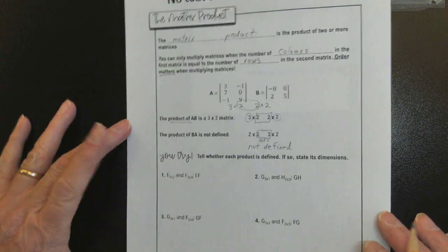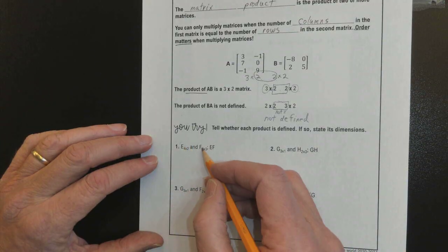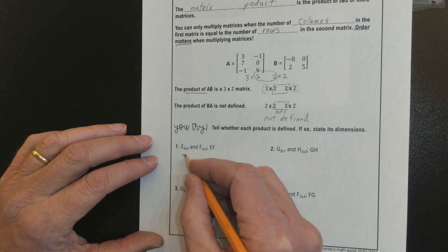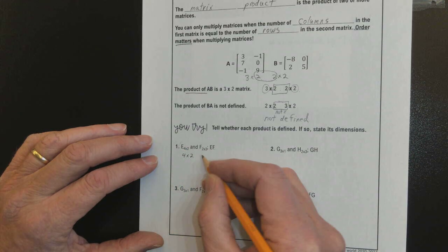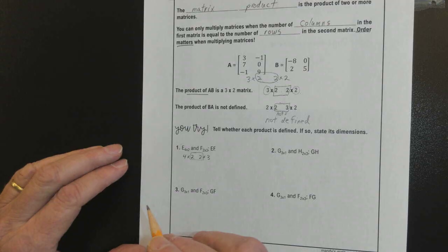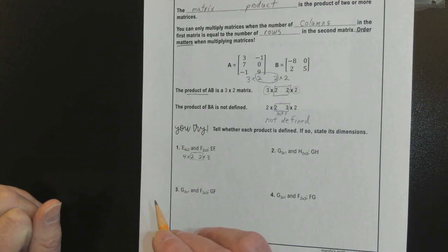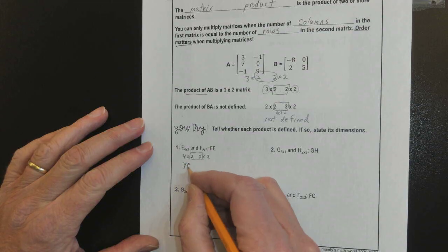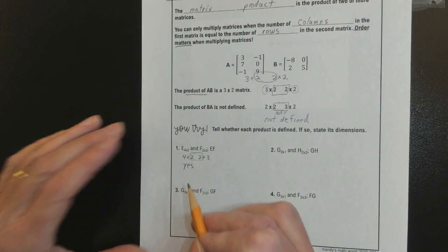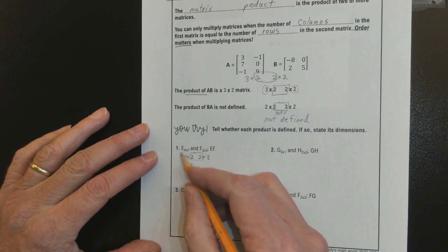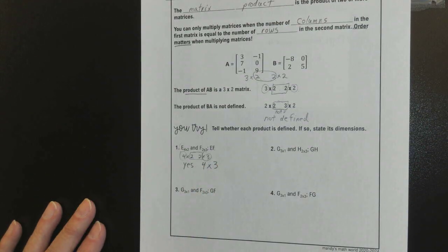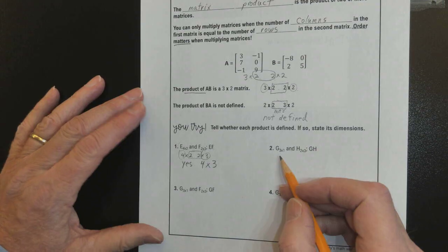They have four examples here. Let's look at the first one. E, F. It does say E times F. The order does matter. E is a 4 by 2. F is a 2 by 3. Am I able to multiply E and F together in that order? E times F? Yes. We can multiply that together. And the result would be what size matrix? A what? A 4 by 3. Good.